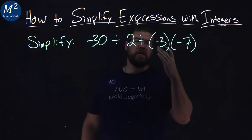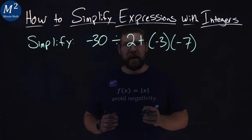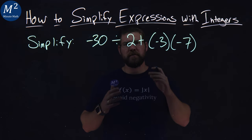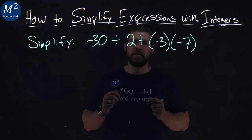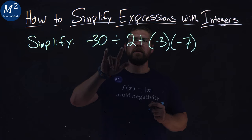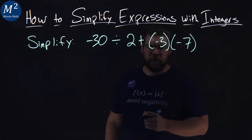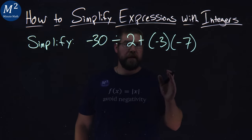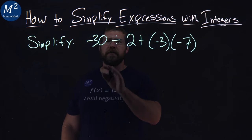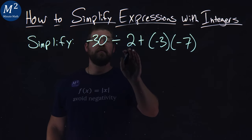Then you have multiplication and division on the same level. They're the same level within PEMDAS, so we read left to right. Technically, our first operation would be this one: negative 30 divided by 2,